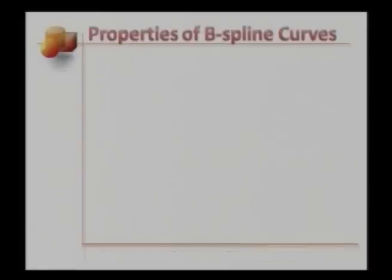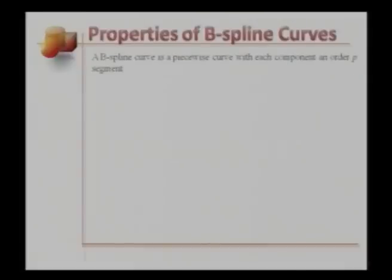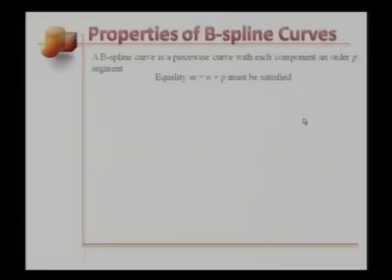Let us look at the properties of B-spline segments. These properties, as in the case of Bezier segments, are dependent on the properties of the respective B-spline basis functions. The first property: a B-spline curve is a piecewise curve with each component being an order-p segment. This is expected because each B-spline basis function is itself a piecewise curve, with each piece being an order-p segment. The equality m = n + p must be satisfied.